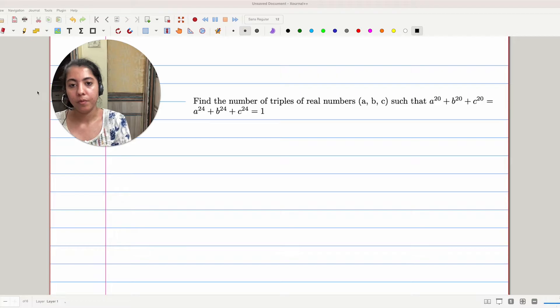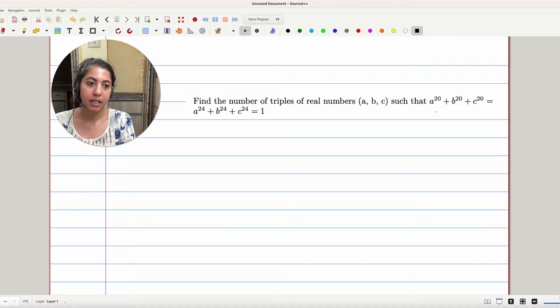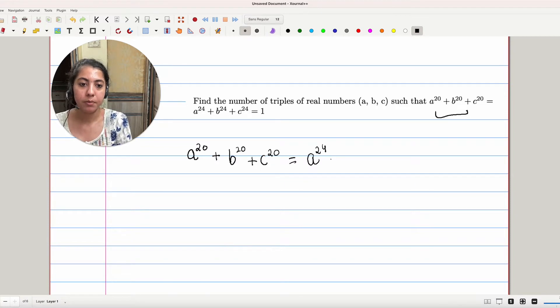In this question, we have to find the number of triples of real numbers a, b, c such that they satisfy this equation. The equation is given as a to the power 20 plus b to the power 20 plus c to the power 20 equals a to the power 24 plus b to the power 24 plus c to the power 24 equals 1.